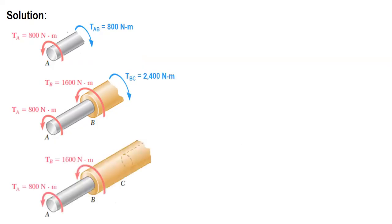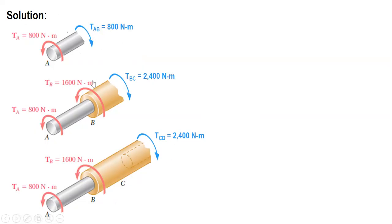For segment CD, we still have 800 and 1600, so the resisting torque is also 2400 Nm. As we can see, the resisting torques of all three segments have the same direction. Therefore, we are going to add the angle of twist for each segment.